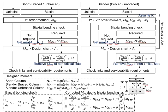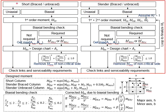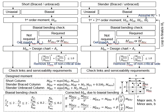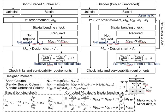Without further ado, let us get started. This diagram summarizes the calculation steps for various types of column. We have short column and slender column, and each of them can be classified into braced and unbraced structure. In terms of the loading, the moment may be subjected in one single axis or in both axes. Same goes for the slender column.